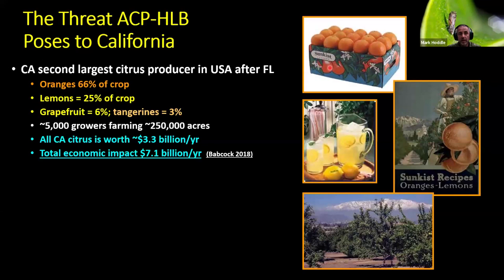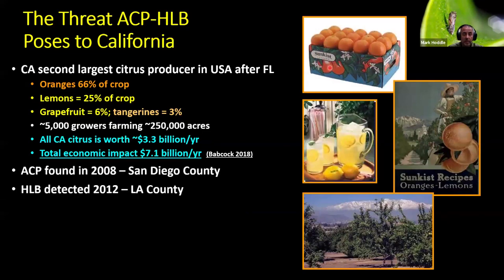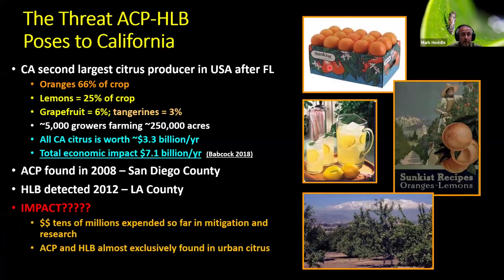What threat does this ACP-Huanglongbing problem pose to California? California is the second largest citrus producer in the U.S. after Florida, mainly producing fresh fruit. The total economic impact of the citrus industry in California was estimated to be over $7 billion per year as of 2018. In 2008, Asian citrus psyllid was found in San Diego County, and then in 2012, the disease Huanglongbing was detected in Los Angeles County. A big question we've been addressing is: what have the impacts been of Asian citrus psyllid and Huanglongbing on citrus in California?